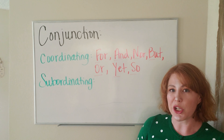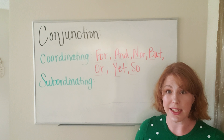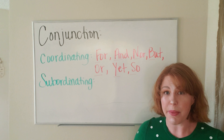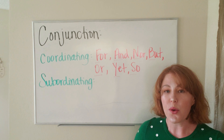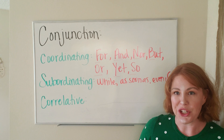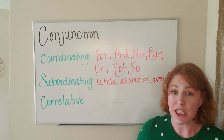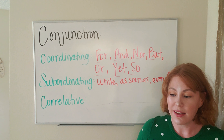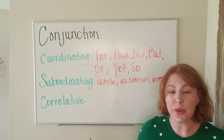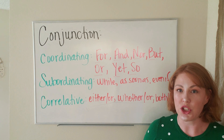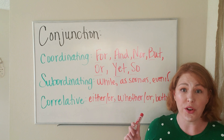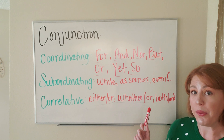The next type of conjunction is called a subordinating conjunction. These conjunctions join an independent clause with a dependent clause. The last type of conjunction is called a correlative conjunction — a pair of conjunctions that join two equal clauses. Correlative conjunctions use words like either/or, whether/or, and both/and.